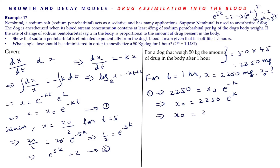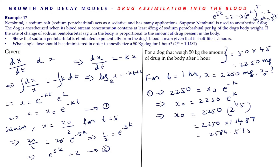Therefore x₀ = 2250 × 2^(1/5). The value of 2^(1/5) is 1.1487, so x₀ = 2250 × 1.1487 = 2584.575, approximately 2585 mg. An initial dose of 2585 mg of sodium pentobarbital should be administered to a 50 kg dog so that it will be anesthetized for 1 hour.